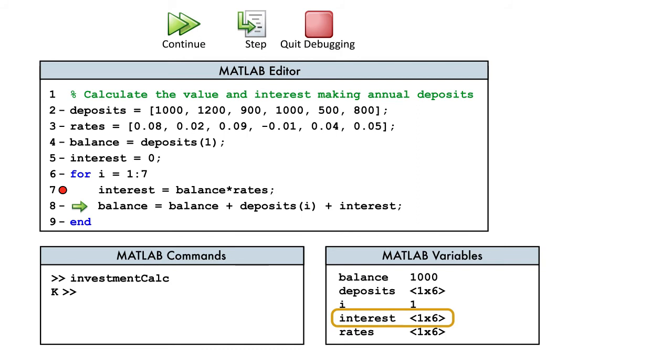The variable interest is updated and we see it is a vector of 6 elements. We meant for interest to be a scalar value, so it looks like we might have found our error.